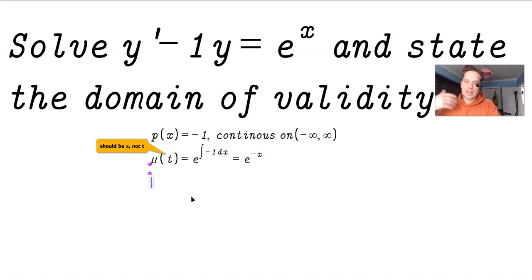Then you multiply every term in the equation by this quantity, so it's e^(-x) times y' minus e^(-x) times y equals e^x times e^(-x). Again, every single term gets affected the same way.